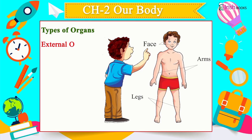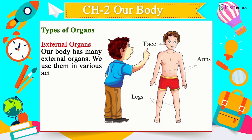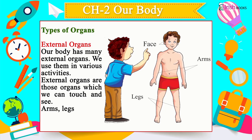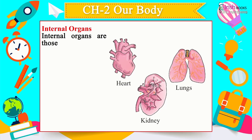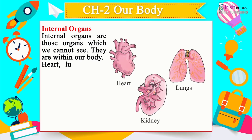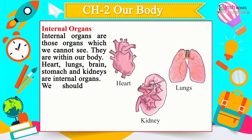Types of Organs: External organs are those we can touch and see — legs, arms, face — used in various activities. Internal organs are those we cannot see, located within our body: heart, lungs, brain, stomach and kidneys. We should take proper care of our organs, exercise regularly and keep them clean.